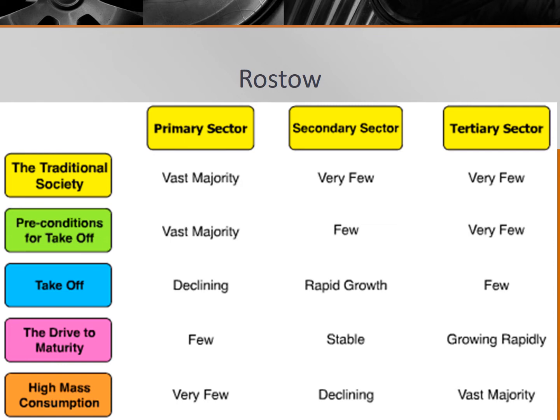By stage three, known as the takeoff stage, rapid rural to urban migration occurs as manufacturing quickly expands, and the secondary sector becomes dominant. The U.S. experienced this during the second half of the 1800s, and Brazil is experiencing it now.